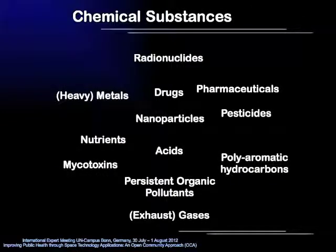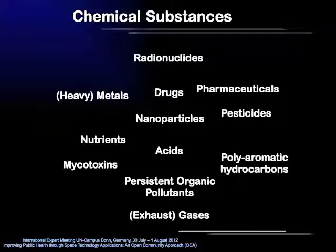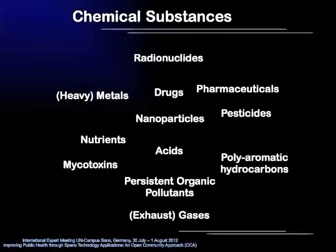What are chemical substances? This is a very broad term including solids, liquids and gases. Chemical substances can be grouped based on their characteristic properties, such as radionuclides, heavy metals, nanoparticles, acids, polyaromatic hydrocarbons, or persistent organic pollutants.